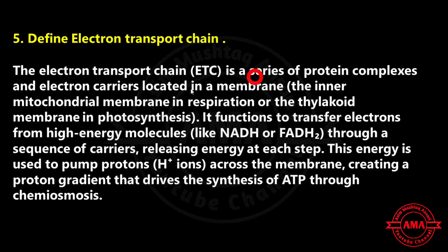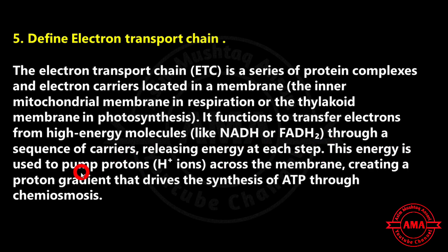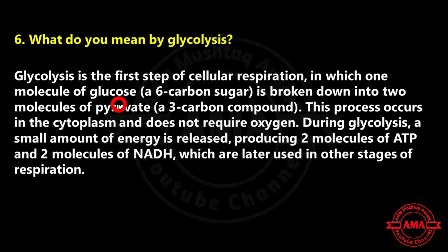The fixed carbon is then reduced using ATP energy and NADPH reducing power produced in the light-dependent reactions, forming three-carbon sugars that later combine to produce glucose and other carbohydrates. Next: define electron transport chain. The electron transport chain is a series of protein complexes and electron carriers located in the membrane — the inner mitochondrial membrane in respiration, or the thylakoid membrane in photosynthesis.